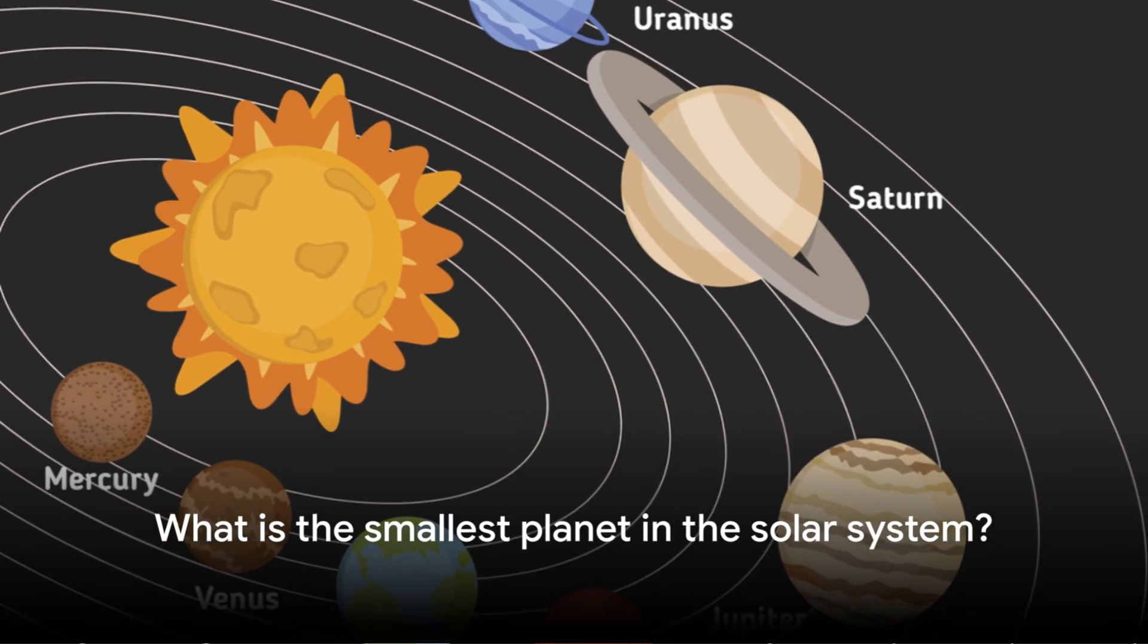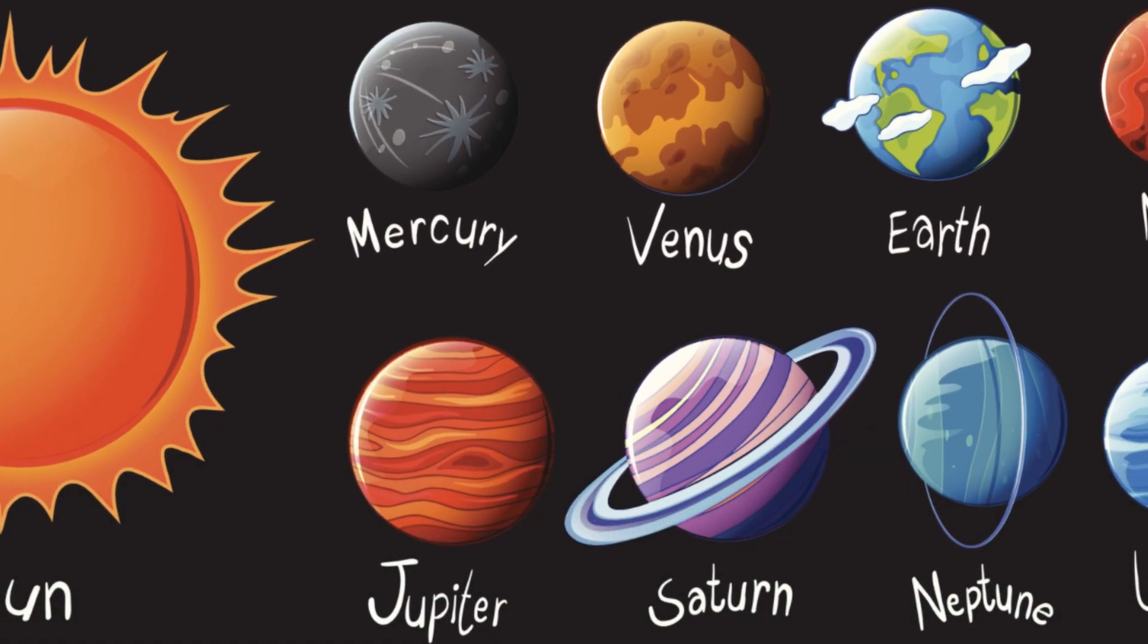Mercury is the smallest planet in the solar system. It is only slightly larger than Earth's moon.